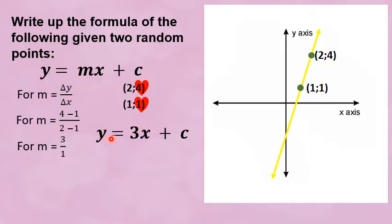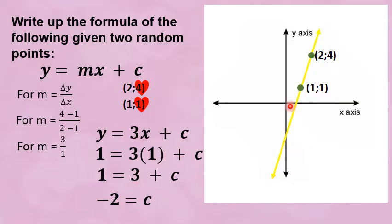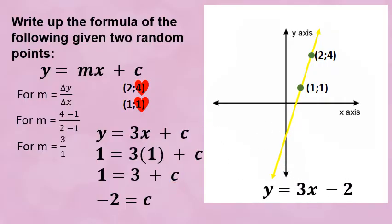I replace the x value with 1 and the y value with 1. Then all you need to do is simplify: 3 times 1 is 3, and bringing that over, 1 minus 3 gives you negative 2. So c, the y-intercept, is negative 2. You can check yourself — does it lie at the bottom of the y-axis to make it negative? Yes it does. Always remember to write up the equation at the end. The equation of that line is y is equal to 3x minus 2.